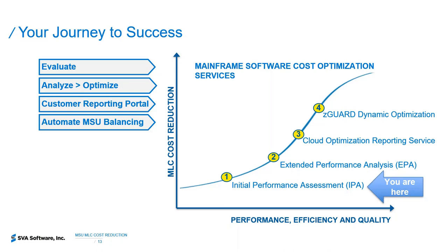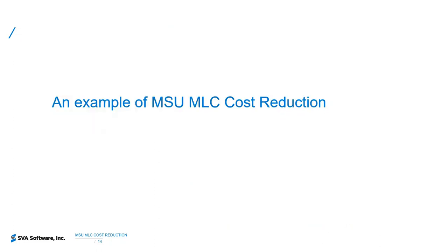In conjunction with the EPA, we have the cloud optimization reporting service — we train customers so they have the ability to understand how to report and analyze the data themselves. Further along the journey, once customers are mature with ZWR services and reporting capabilities, we can implement ZGUARD dynamic optimization. That's a hands-off solution that makes intelligent dynamic decisions to optimize ALPAR and reduce MSU MRC cost while ensuring performance remains optimal.